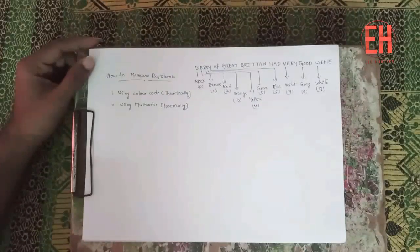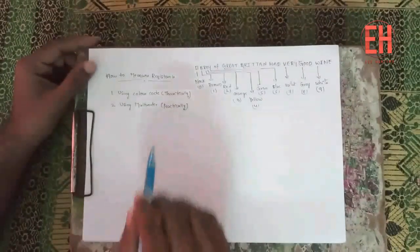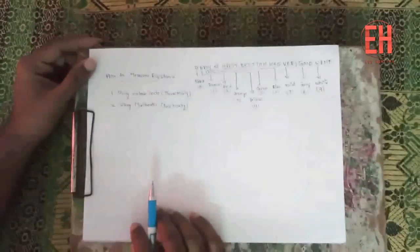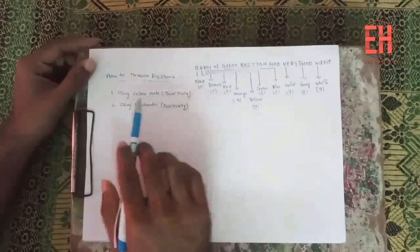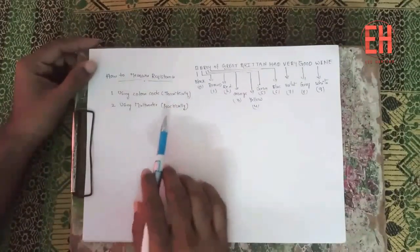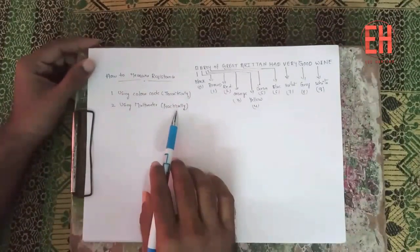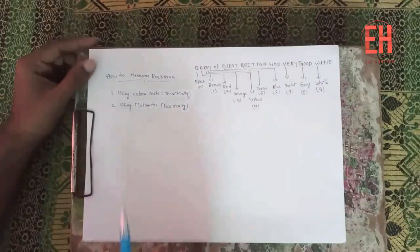I am going to explain about how to measure resistance. We can measure resistance in two ways: theoretically and practically. Theoretically means we can measure its value by using color code. Practically means by using a multimeter.